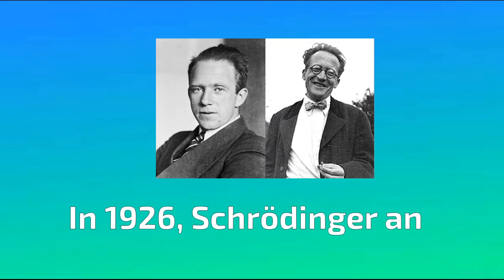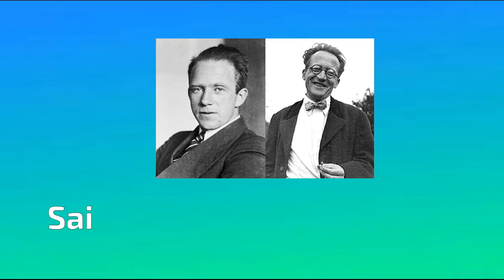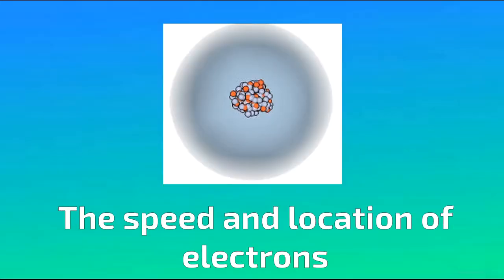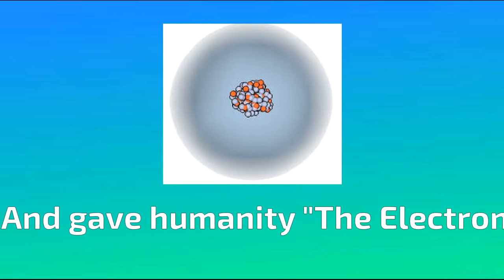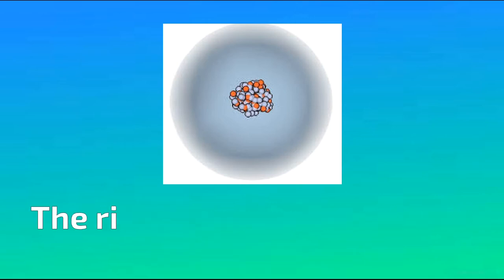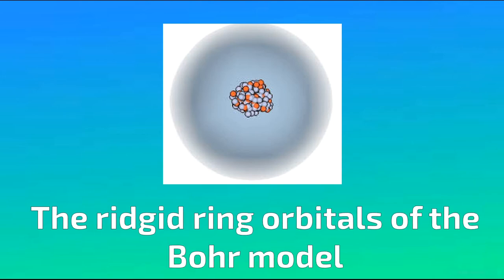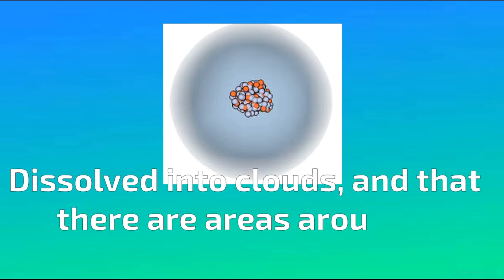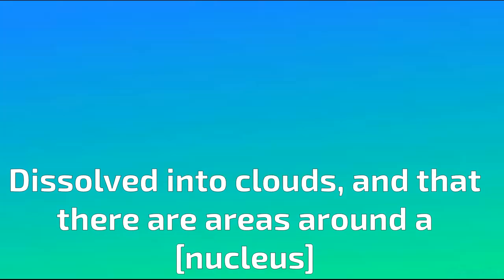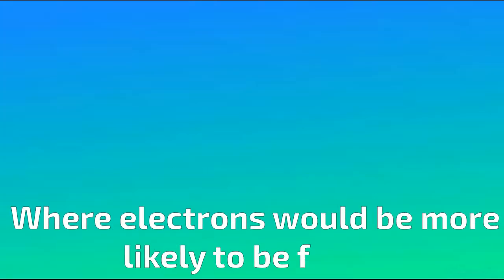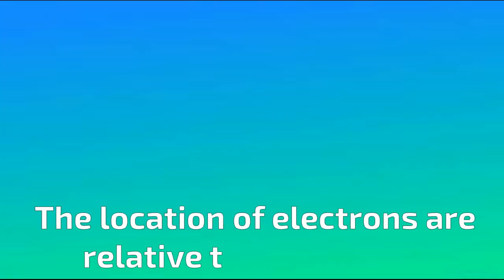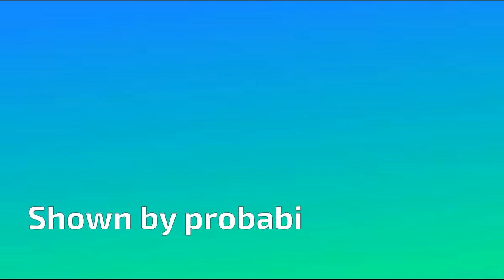In 1926, Schrodinger and Heisenberg said that it is impossible to predict the speed and location of electrons, and gave humanity the electron cloud model, or quantum mechanical model. The rigid ring orbitals of the Bohr model dissolved into clouds, and that there were areas around an atom where electrons would be more likely to be found. The location of electrons relative to a nucleus was shown by probabilities in this model.